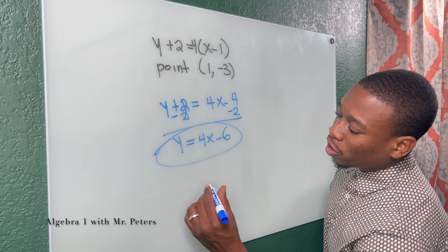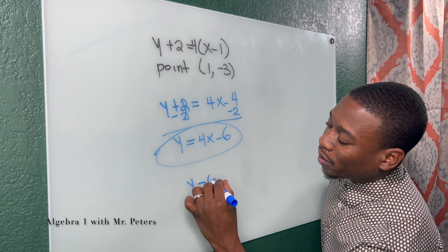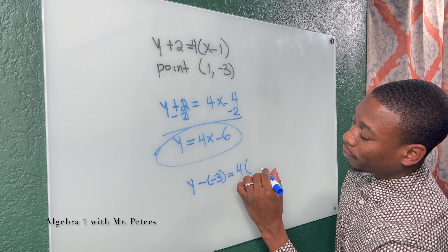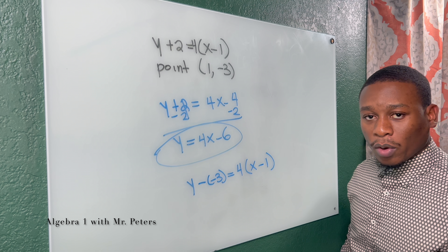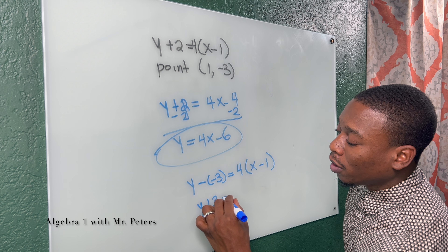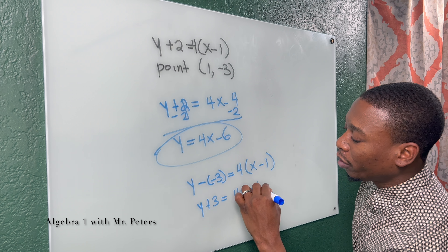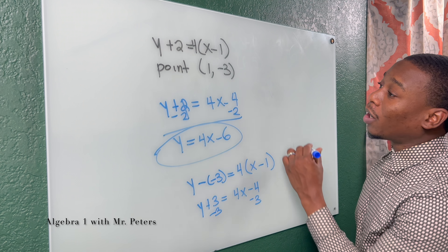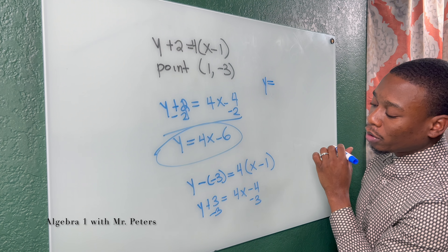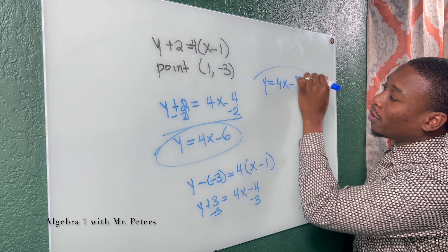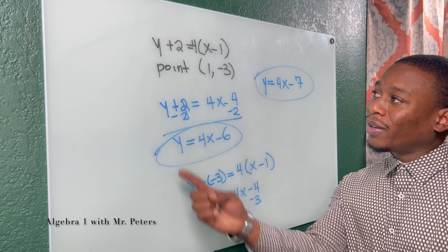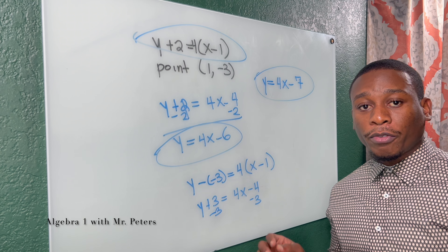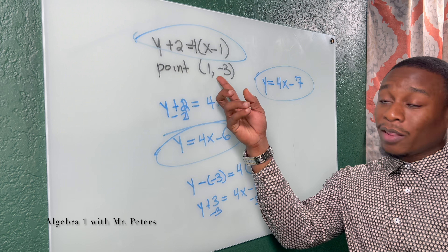So now let's do it. We're going to have Y minus negative three is equal to four times X minus one. Simplifying: Y plus three is equal to four X minus four. Once I subtract three on both sides, my final answer for the equation of the parallel line is going to be Y is equal to four X minus seven. So if they give you a problem where they did not simplify the equation of the line, make sure you simplify it first before using the point-slope formula.